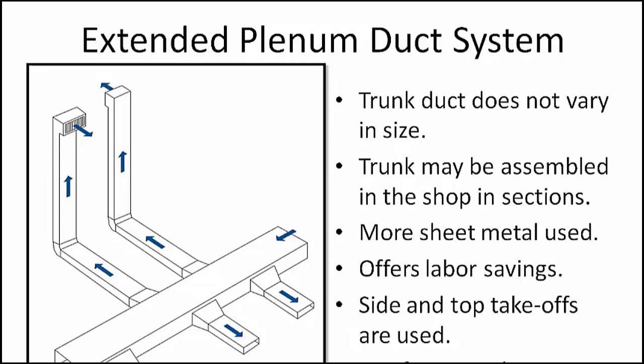There are only two types of takeoff connections for branch ducts: one is for a side takeoff as illustrated here, and the other is for a takeoff from the top of the trunk. The design of these branch takeoff fittings is important — a poor design can result in large pressure losses. However, if the openings are of ample size and the fittings streamlined, it is possible to obtain performance with an extended plenum system comparable to that of a reducing trunk duct system. This system should not be used in larger homes.